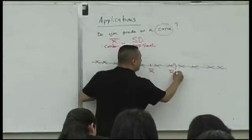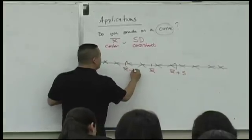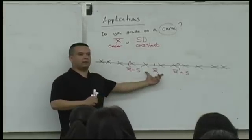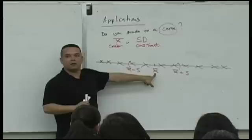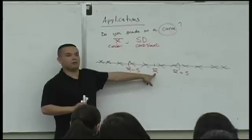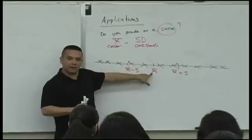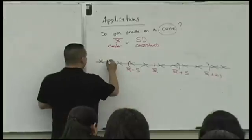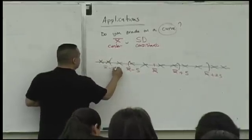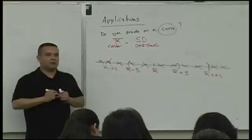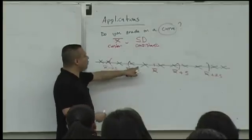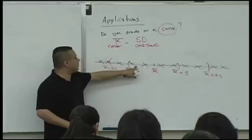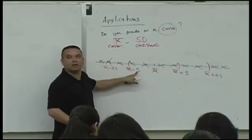Now I'm going to create intervals. The first interval is created by taking the center and adding the standard deviation, and taking the center and subtracting the standard deviation. This interval surrounds the mean. I'll also create a second interval: the mean plus two standard deviations and the mean minus two standard deviations.